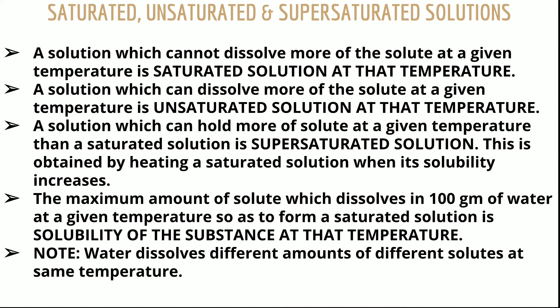If the temperature is raised beyond the saturation point, more solute dissolves and it becomes an unsaturated solution at that temperature. A supersaturated solution can hold more solute at a given temperature than a saturated solution. This is obtained by heating a saturated solution — as solubility increases, more solute is added repeatedly until a point is reached where nothing more dissolves, forming a supersaturated solution.